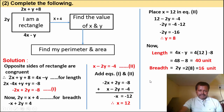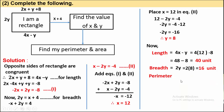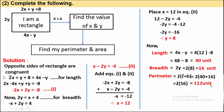Now find perimeter. Formula: perimeter equals 2 into (L plus B). Putting values: 2 into (40 plus 16) equals 2 into 56 equals 112 units. So the perimeter is 112 units.